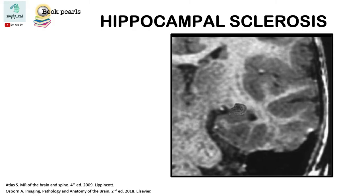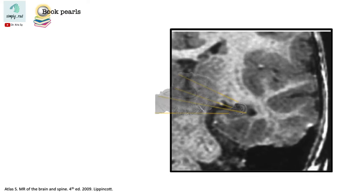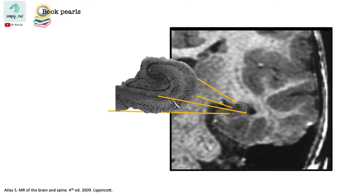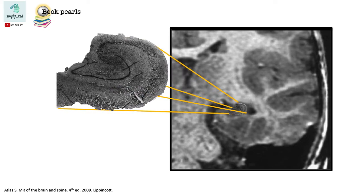This is the Hippocampus. If we take a closer look, we note this interlocking C appearance of the dentate gyrus and the Cornu Ammonis.